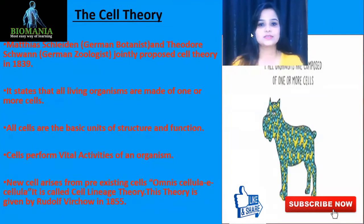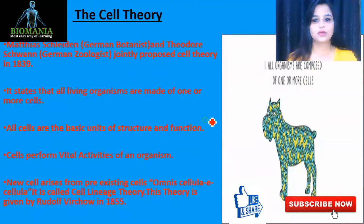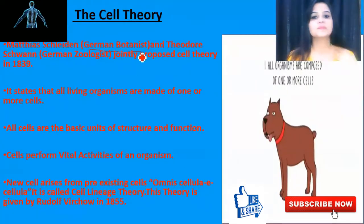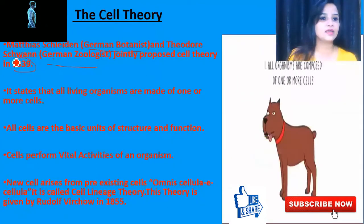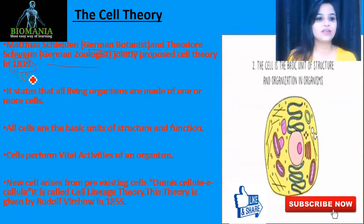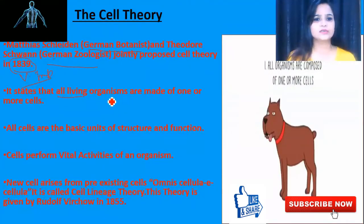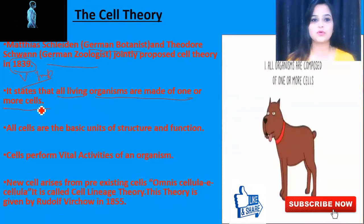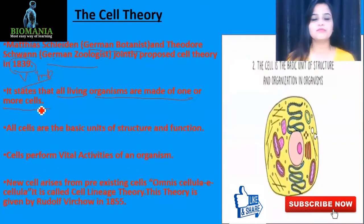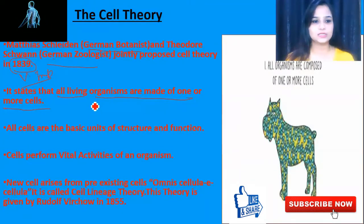Here is the cell theory. Matthias Schleiden, a German botanist, and Theodor Schwann, a German zoologist, jointly proposed the cell theory in 1839 — remember this year, it's very important. What they stated in their cell theory: all living organisms are made of one or more cells. We studied in the previous video that organisms can be unicellular or multicellular, so that's a very simple, easy line you can learn quickly.